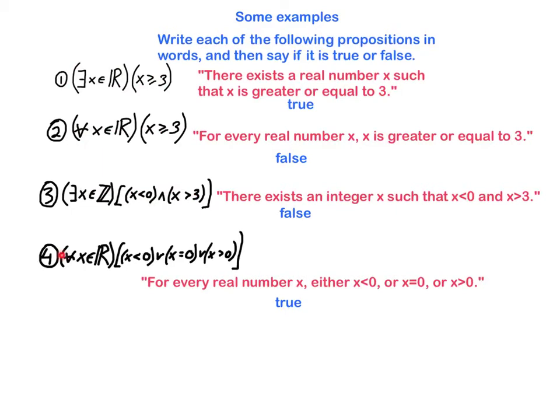And this one says for every real number x, either x is less than 0 or x equals 0 or x is bigger than 0. That's true. It just simply expresses the fact that the real numbers can be partitioned into three disjoint sets: the negative numbers, the positive numbers, and 0.